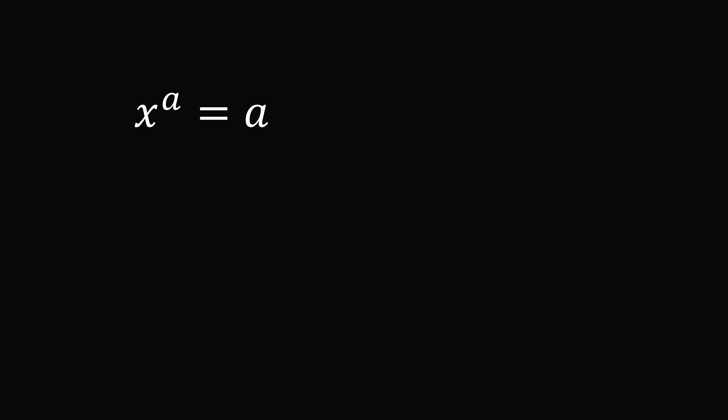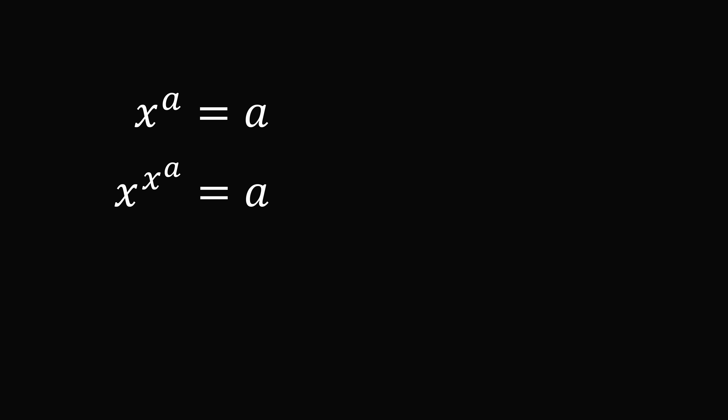Let's generalize this. Suppose we have x to the power of a equals a, where x and a are positive real numbers. The exponent a equals the entire left-hand side x to the power of a, so we can substitute in to get x to the power of x to the power of a equals a. We could substitute again for the exponent a to get x to the power of x to the power of x to the power of a equals a. All of these equations have the same solution as x to the power of a equals a, which is solved by taking both sides to the power of 1 over a: x equals a to the power of 1 over a.